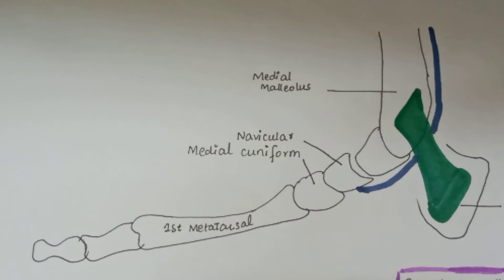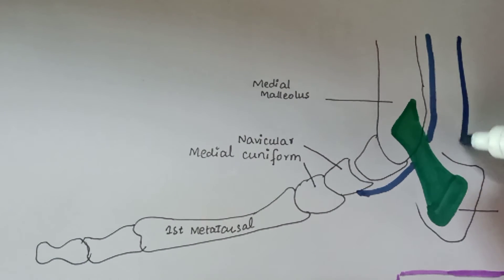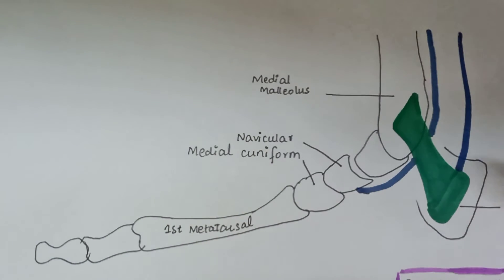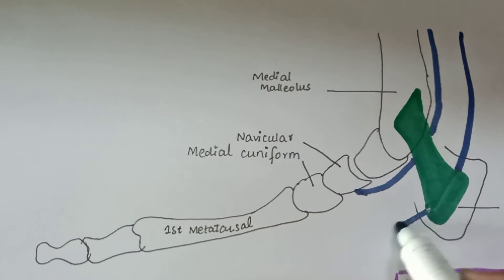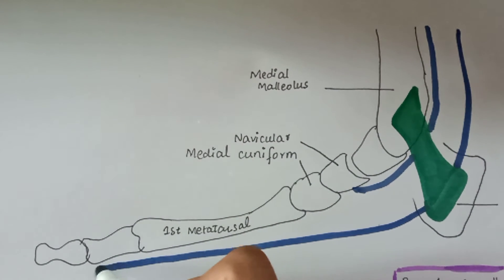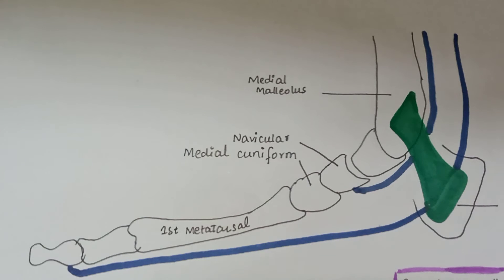Next is the tendon of flexor hallucis longus, which gets inserted at the base of the distal phalanx of the big toe. This is the flexor hallucis longus tendon, which gets inserted at the base of the distal phalanx.